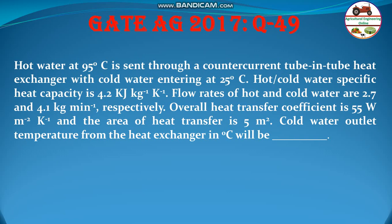Hot water is entering at 95 degrees Celsius and cold water is entering at 25 degrees Celsius. The specific heat capacities of hot water and cold water are 4.2 kJ per kg per Kelvin. Flow rates of hot water and cold water are given as 2.7 and 4.1 kg per minute. The overall heat transfer coefficient is 55 W per m² per Kelvin and the area of heat transfer is 5 square meters.